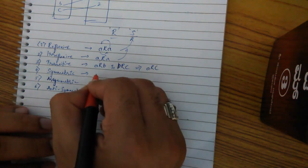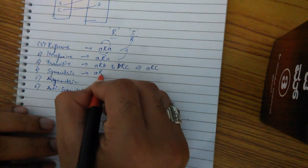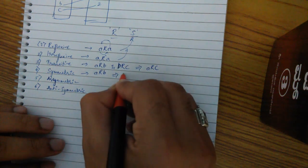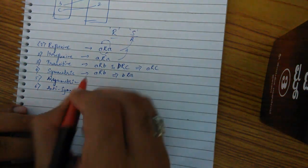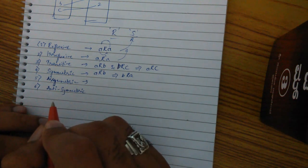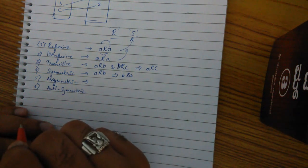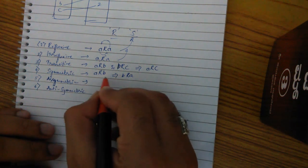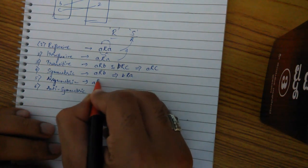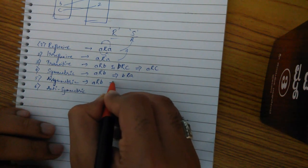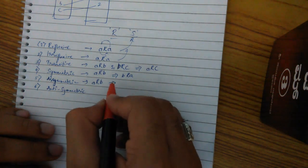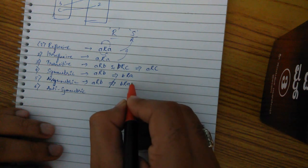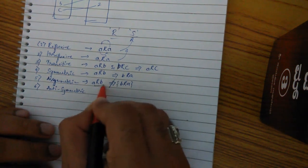Symmetric relationship means: A relates to B implies B relates to A. Asymmetric is just the opposite — A relates to B does not imply B relates to A. So if the first is true, the second will be false.